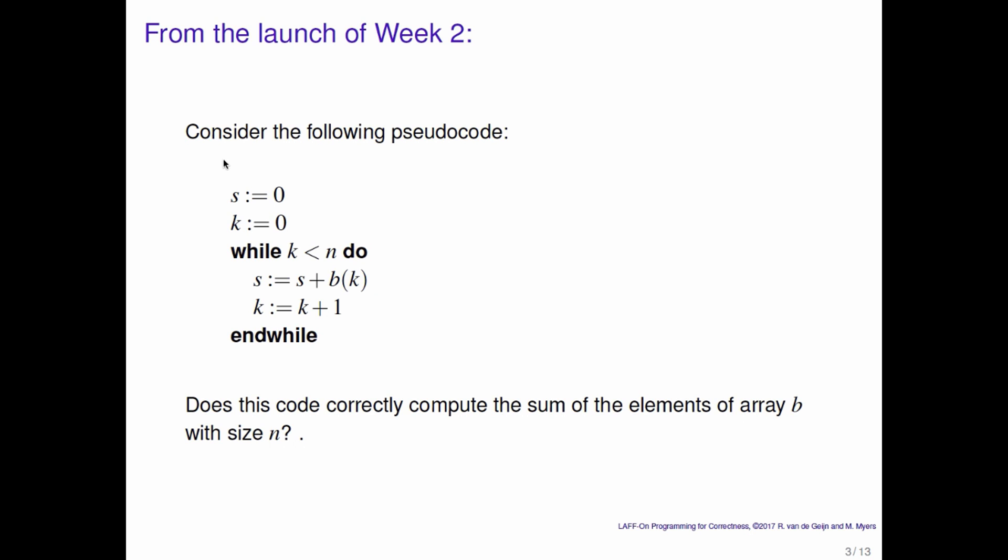It initializes a variable s in which you're going to accumulate the sum to zero. And then you initialize the loop variable k equal to zero. And then you count a loop. You add elements of b to s and you increment the loop index.